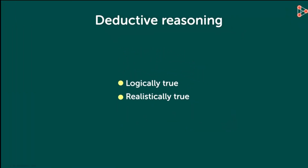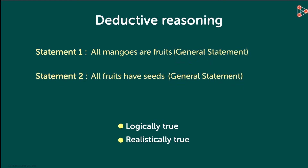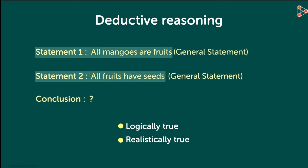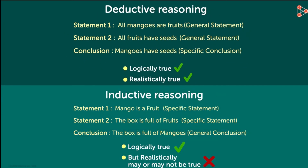Deductive reasoning is always true. For example, statement 1 says all mangoes are fruits — that is a general statement. Statement 2 says all fruits have seeds. What is the conclusion? Mangoes have seeds. If statement 1 and statement 2 are true, then the conclusion is also true, because all mangoes have seeds.